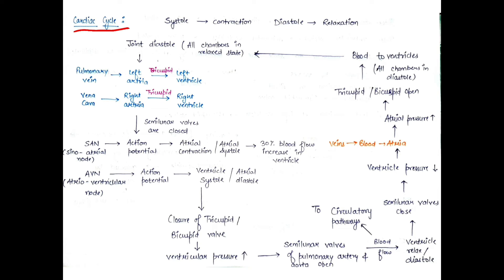Next is the cardiac cycle. If you understand it completely, you can easily understand double circulation of blood. There are some important terms: systole means contraction and diastole means relaxation. So arterial systole means atrial contraction, and arterial diastole means atrial relaxation.